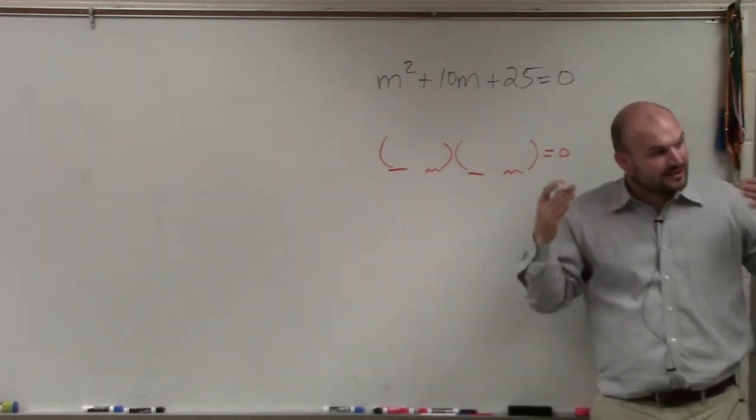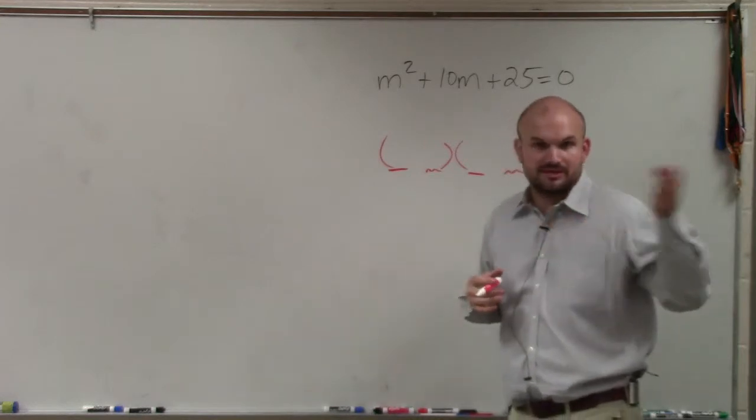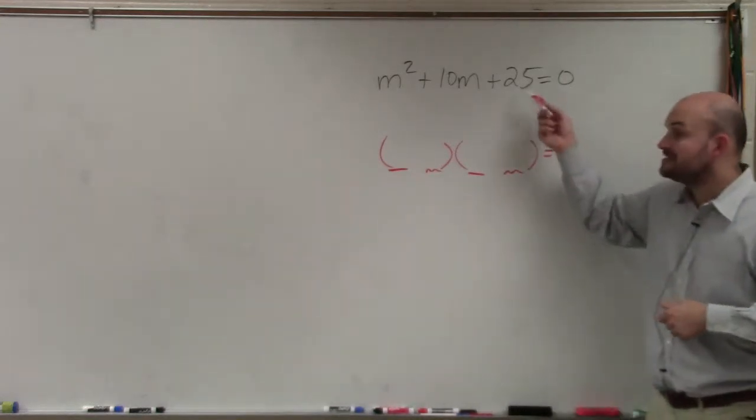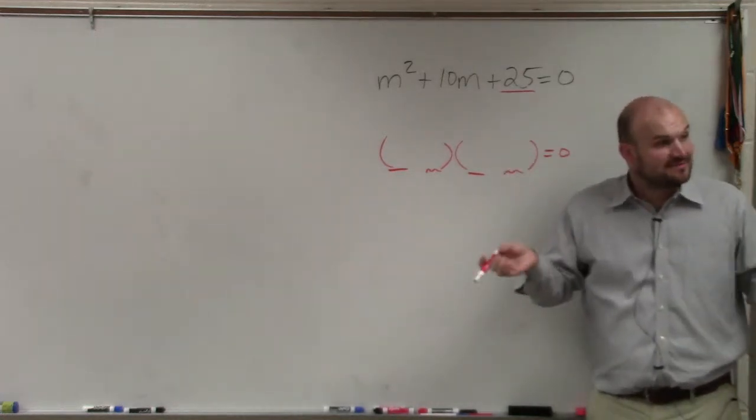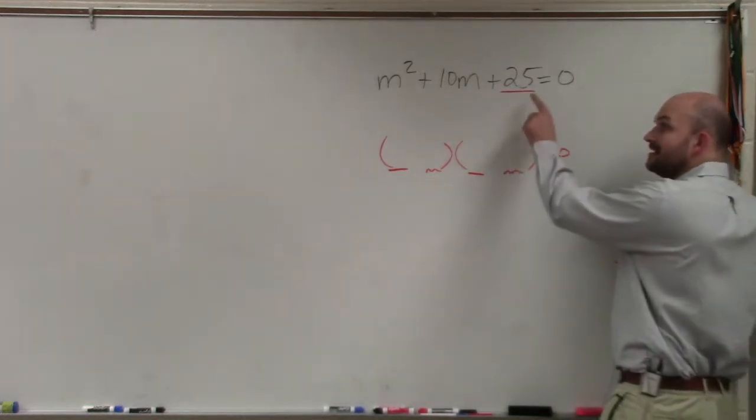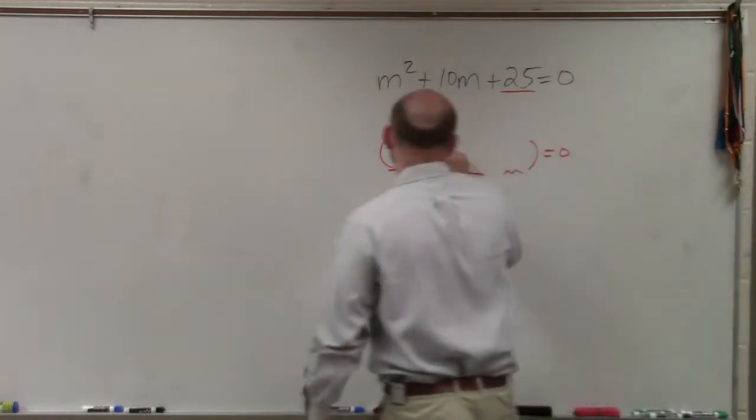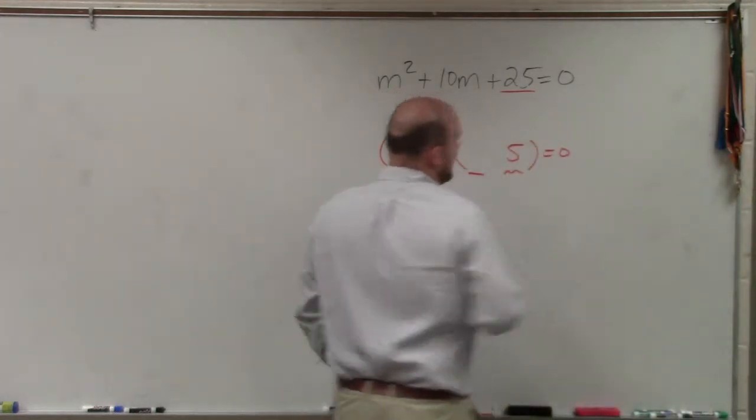So if I look at square numbers, remember, square numbers are numbers that you can take the square root of. So is 25 a number we can take the square root of? Yeah, it's 5 times 5. So what I notice is, hey, to multiply to give me these two numbers is going to be 5 times 5.